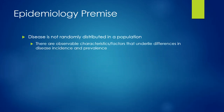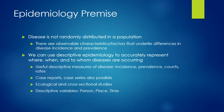The underlying premise of epidemiology is that disease doesn't happen at random, so we can identify characteristics or factors that underlie differences in the incidence or prevalence of disease within populations. Doing this is really using descriptive epidemiology to represent the where, when, and to whom diseases are occurring.